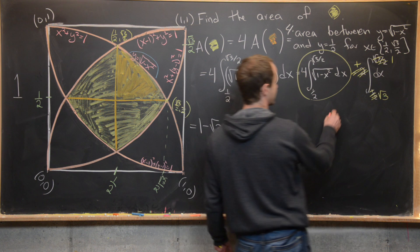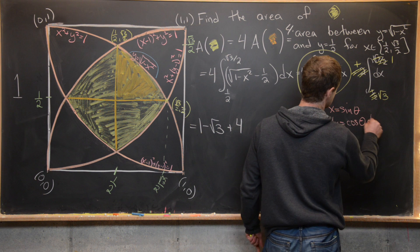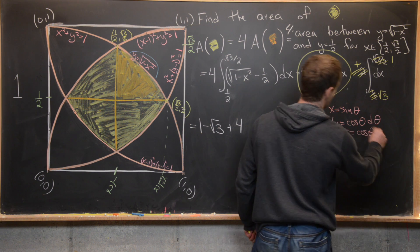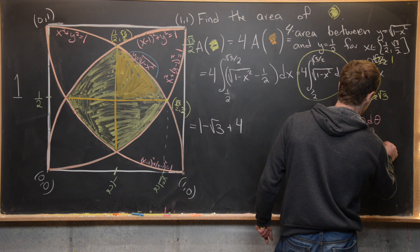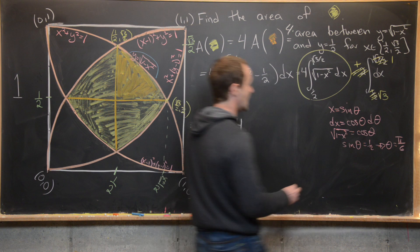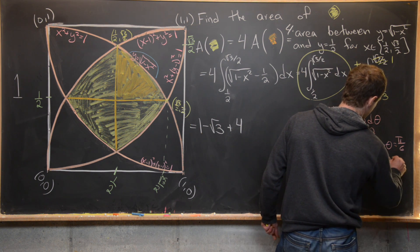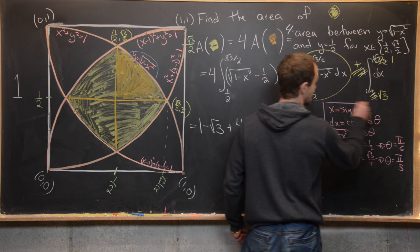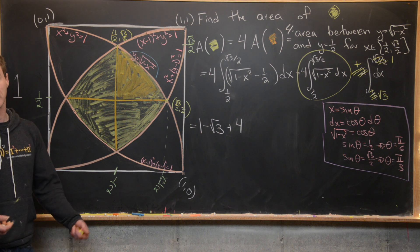The remaining integral calls for a trigonometric substitution: let x = sin θ, so dx = cos θ dθ and √(1 - x²) = cos θ. The bounds transform as follows: sin θ = 1/2 gives θ = π/6, and sin θ = √3/2 gives θ = π/3.